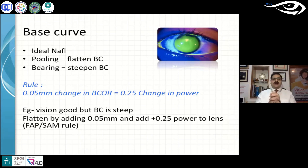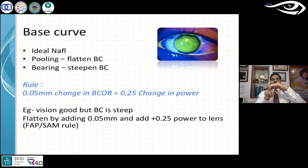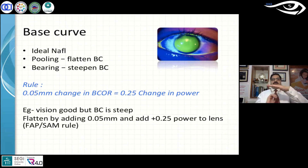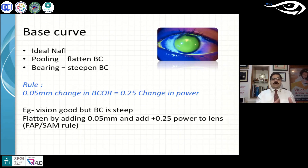The rule of thumb: a 0.05mm change in the back optic zone radius is equivalent to a 0.25D change in power. For example, if the vision is good but the base curve appears too steep, you need to flatten it. When the base curve is steep there is excess fluorescein — an excess positive tear lens. When you flatten the base curve, the tear lens becomes more myopic, so you need to add +0.25D to the power for each step flatter. This is remembered by the SAM and FAP rule: Flat Add Plus — if going flatter, add plus power; Steeper Add Minus — if going steeper, add minus power.